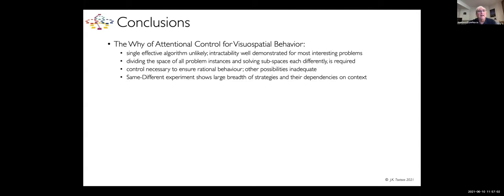For the why of attentional control in my title, what we've shown is a single effective algorithm is unlikely. Intractability is well demonstrated for most interesting problems, and what that tells you is that you need to divide the space of all problem instances and solve these subspaces each differently. Control is necessary to ensure rational behavior, because other possibilities are inadequate. Our example of the same different experiments shows the large breadth of strategies and the dependencies on context.